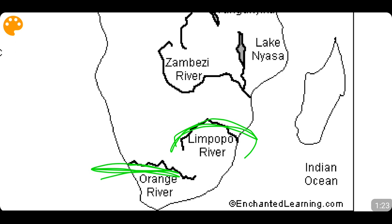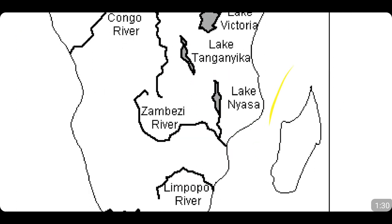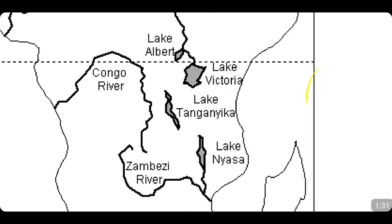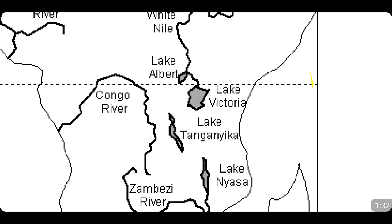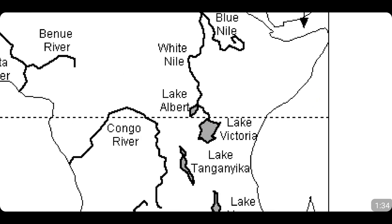This is the Orange River, Limpopo River, Zambezi River. This is Lake Nyasa. All the important lakes of Africa I have already covered in my important lakes video. This is the Congo River — you can see this Congo River is cutting the equator twice.